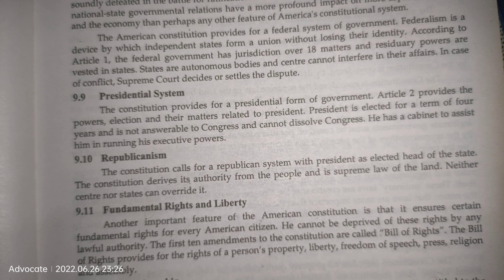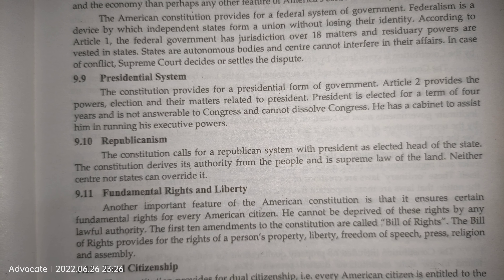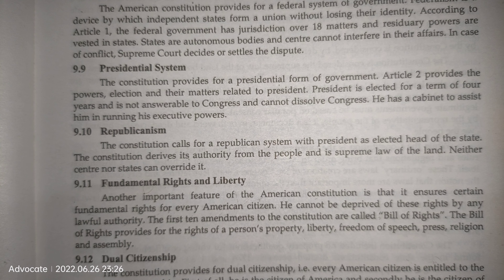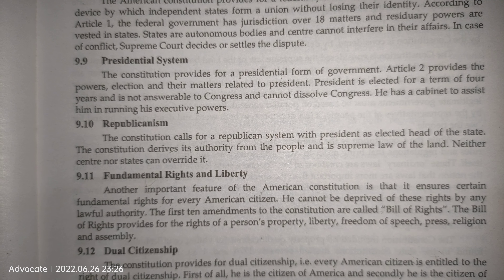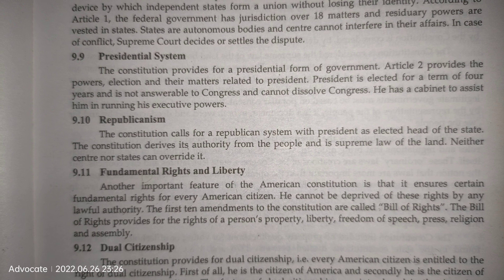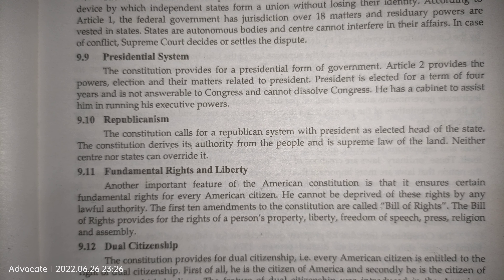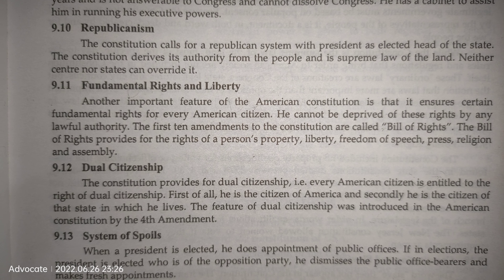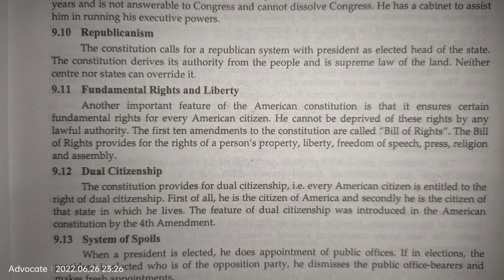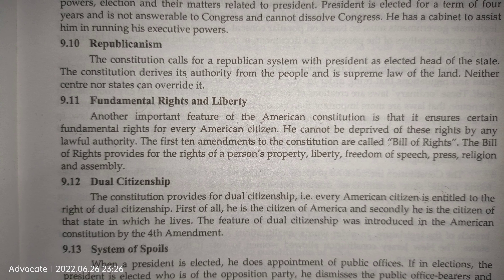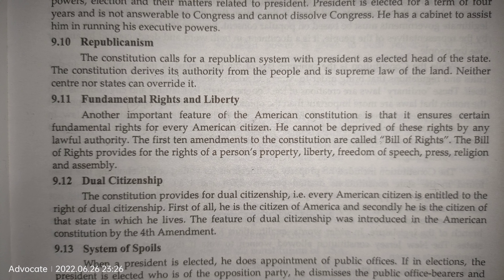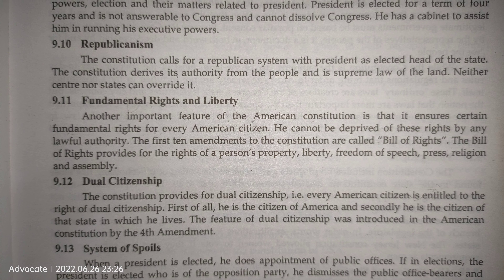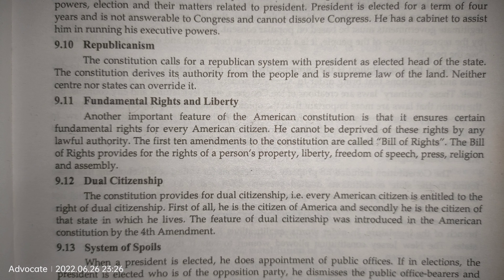The Constitution provides the presidential form of government. Article 2 provides the powers, election, and other matters related to the president. The president is elected for a term of four years and is not answerable to Congress and cannot dissolve Congress. He has a cabinet to assist him in running his executive powers. The Constitution also calls for a republican system with the president as elected head of state. The Constitution derives its authority from the people and is the supreme law of the land — neither the center nor the states can override it.